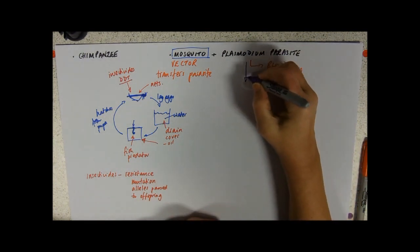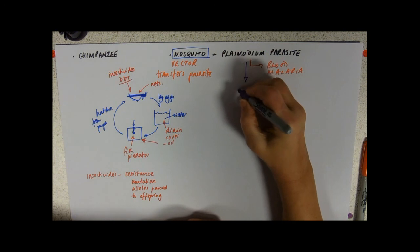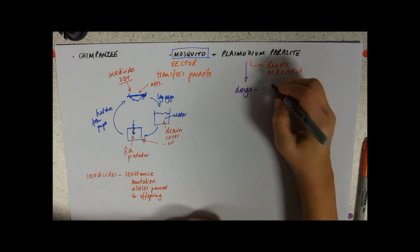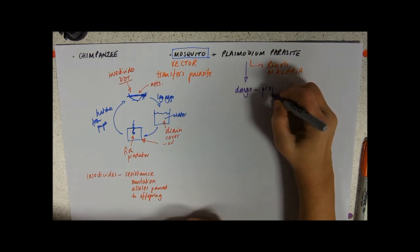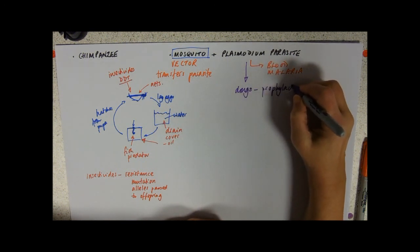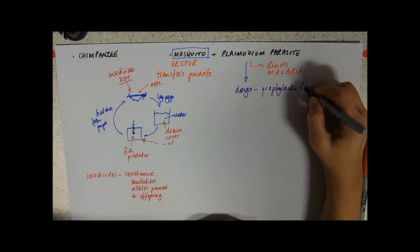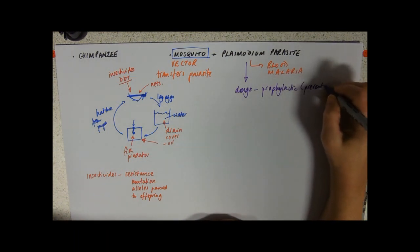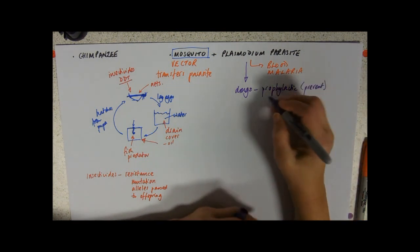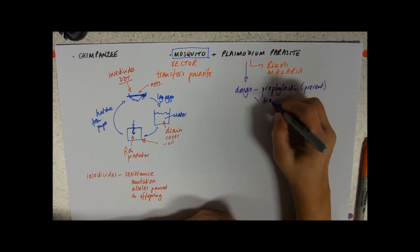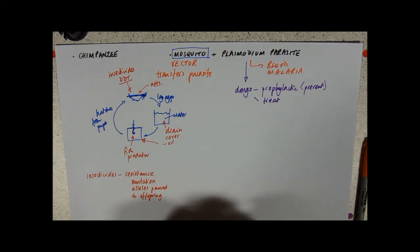The other sort of angle of attack is to attack the parasite itself. And you may have been on holiday to a malarial country where you have had to take anti-malarial drugs. It's both what I would call prophylactic, which are the ones that prevent you, preventing drugs. And ones to treat it should you be unfortunate enough to come down with the symptoms.